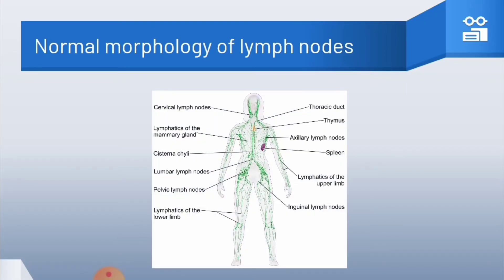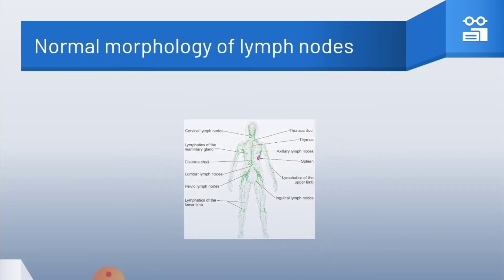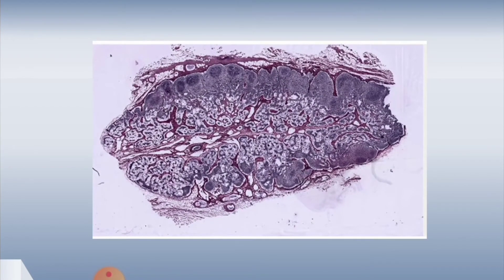Generally, lymph nodes are the most common site that may be involved during cytomegalovirus infection. Before we observe the pathological effects on lymph nodes due to CMV, we must know the normal structure and morphology of lymph nodes. Lymph nodes have two surfaces: a convex surface and a concave surface. The concave surface is also called the hilum. Three important structures present there are the artery, vein, and efferent lymphatic.